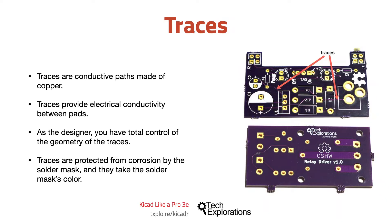Traces, which are also called tracks, are conductive paths. Most often they are made of copper. Traces are used to transmit signals and power throughout a circuit.